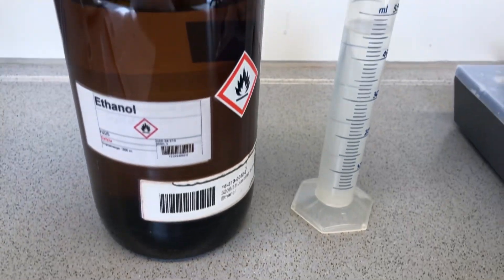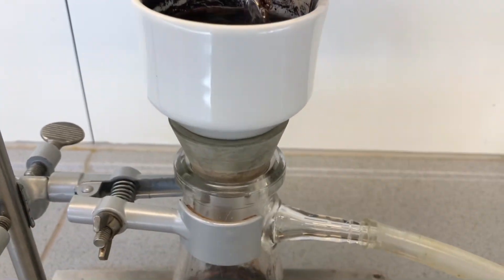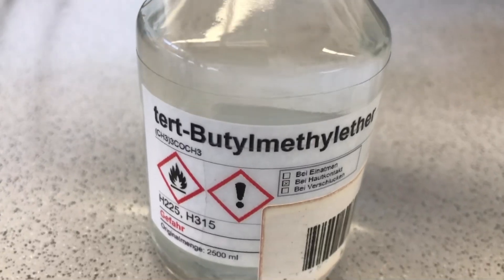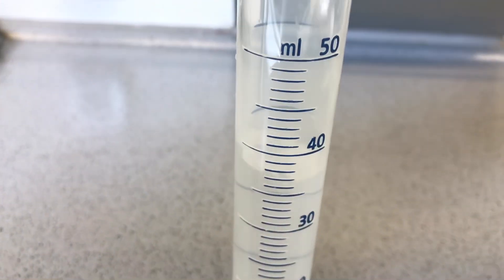For the second wash, 45 milliliters of ethanol were used. And for what I hoped would be the last wash, we used 45 milliliters of butyl methyl ether.